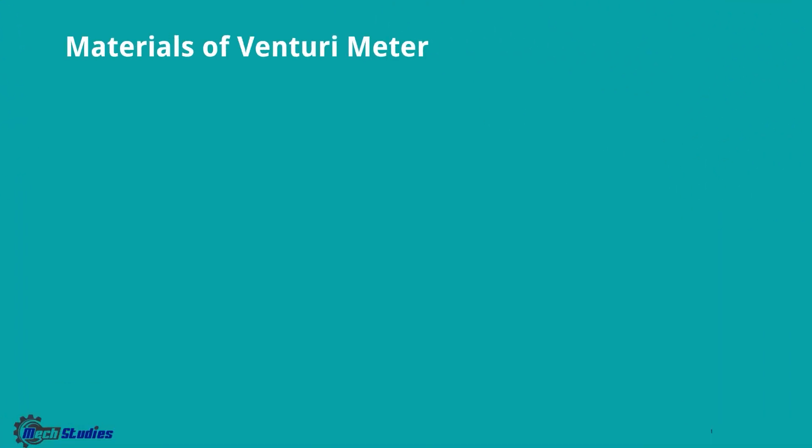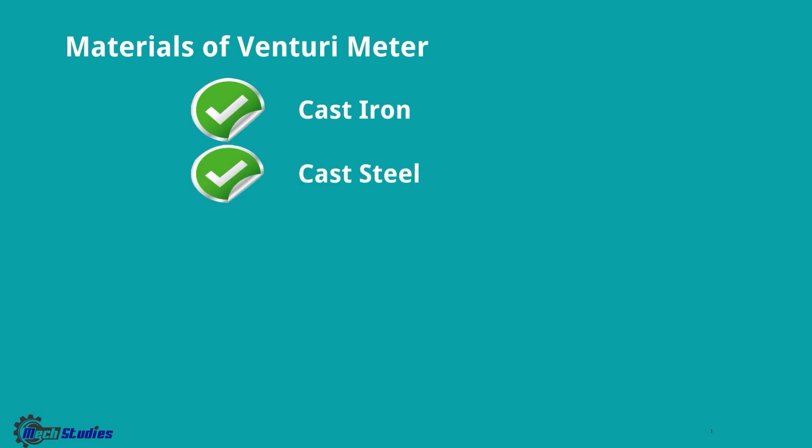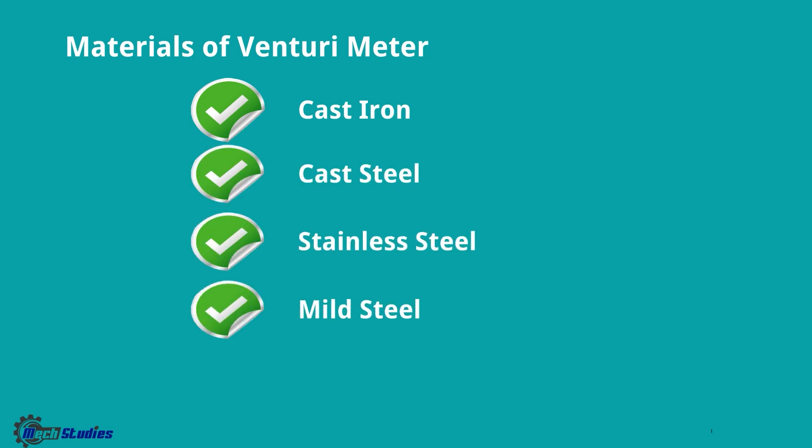Regarding materials of a Venturimeter: various materials are used, including cast iron, cast steel, stainless steel, mild steel, and bronze.